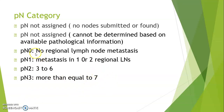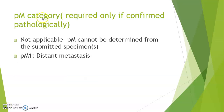To summarize: N0 — no regional lymph nodes; N1 — 1 or 2; N2 — 3 to 6 lymph nodes; N3 — more than or equal to 7 lymph nodes showing metastasis. For the PM category, metastasis confirmation is required only if confirmed pathologically. PM not applicable when it cannot be determined from the submitted specimen, and PM1 when there is distant metastasis.